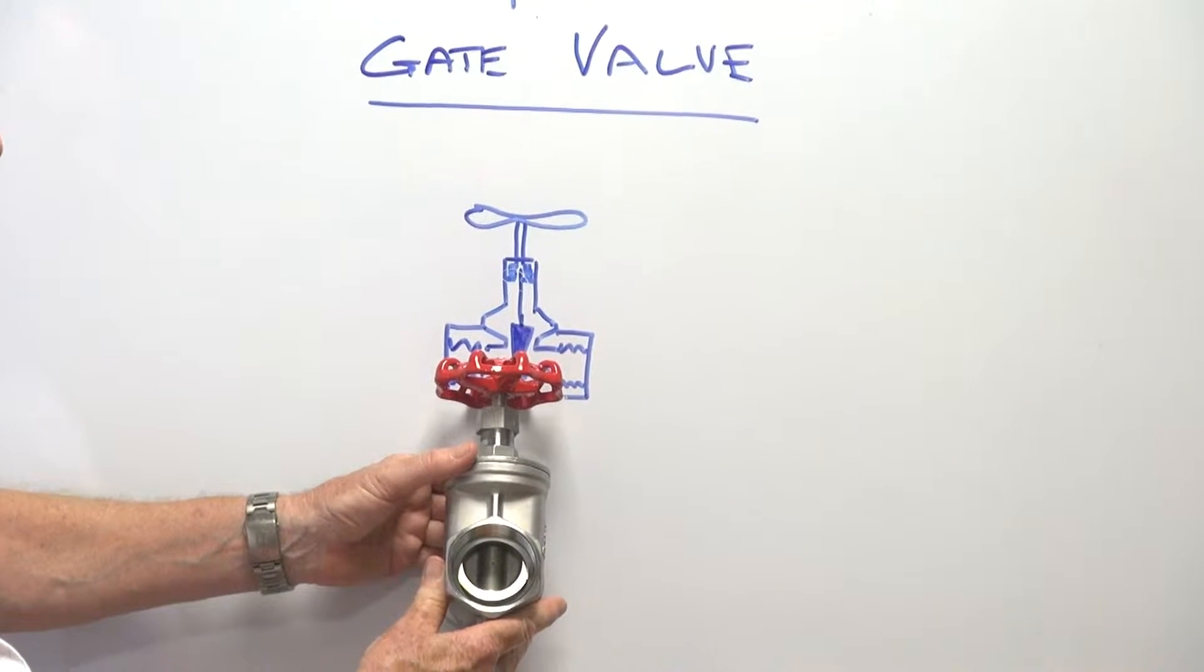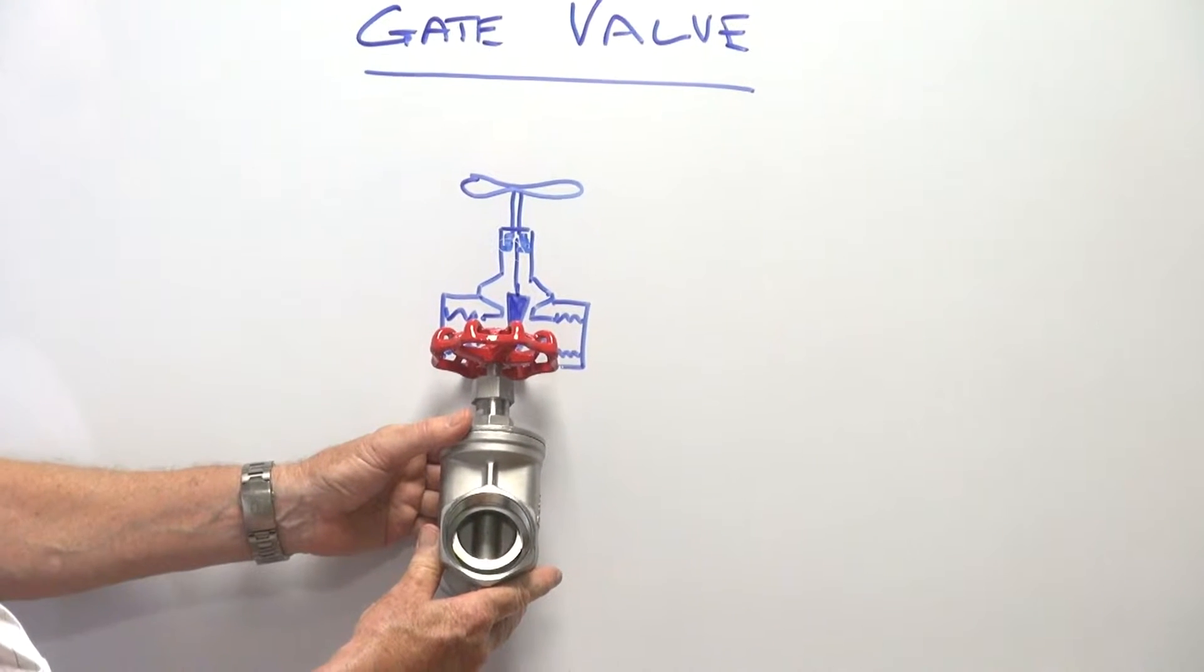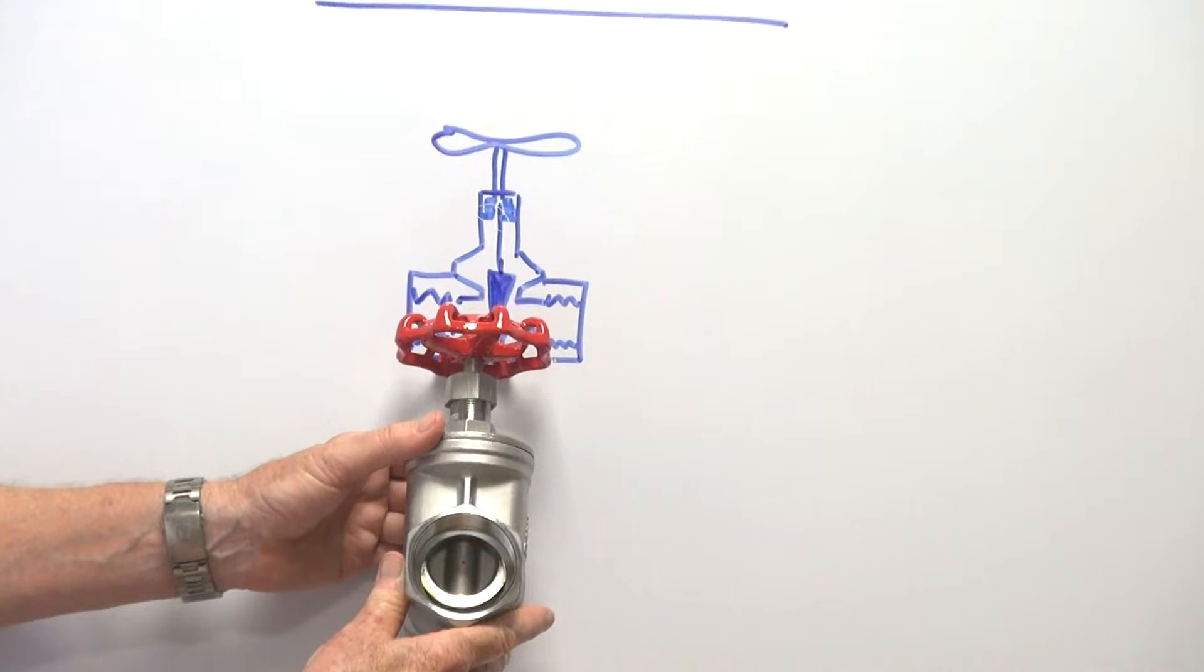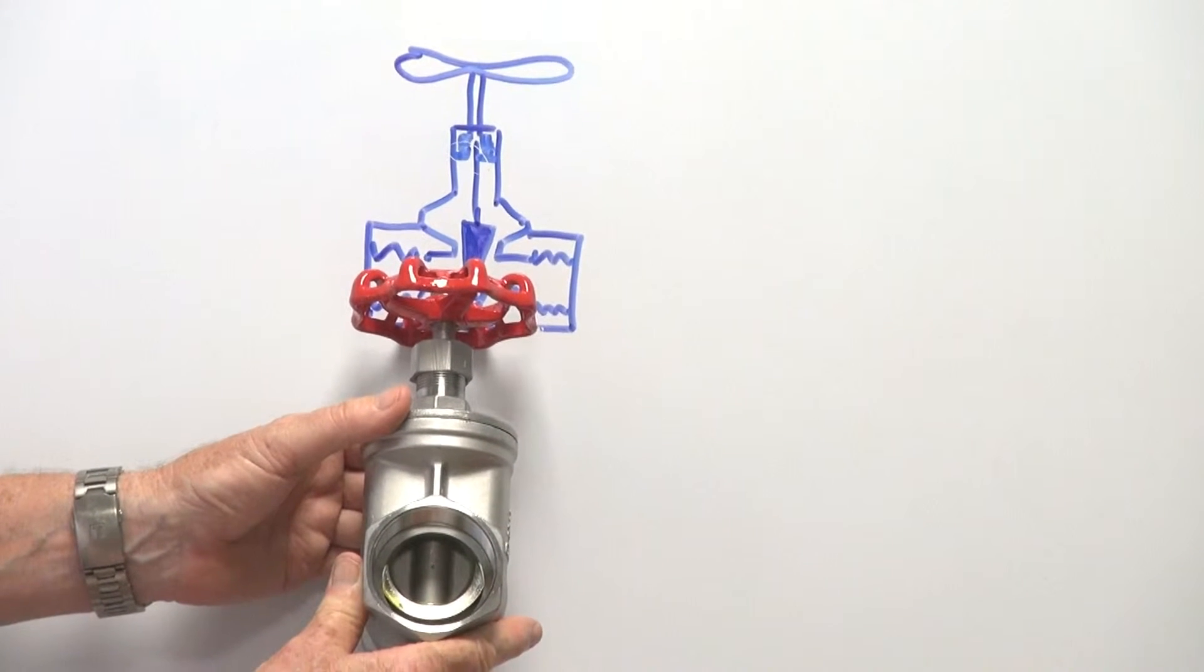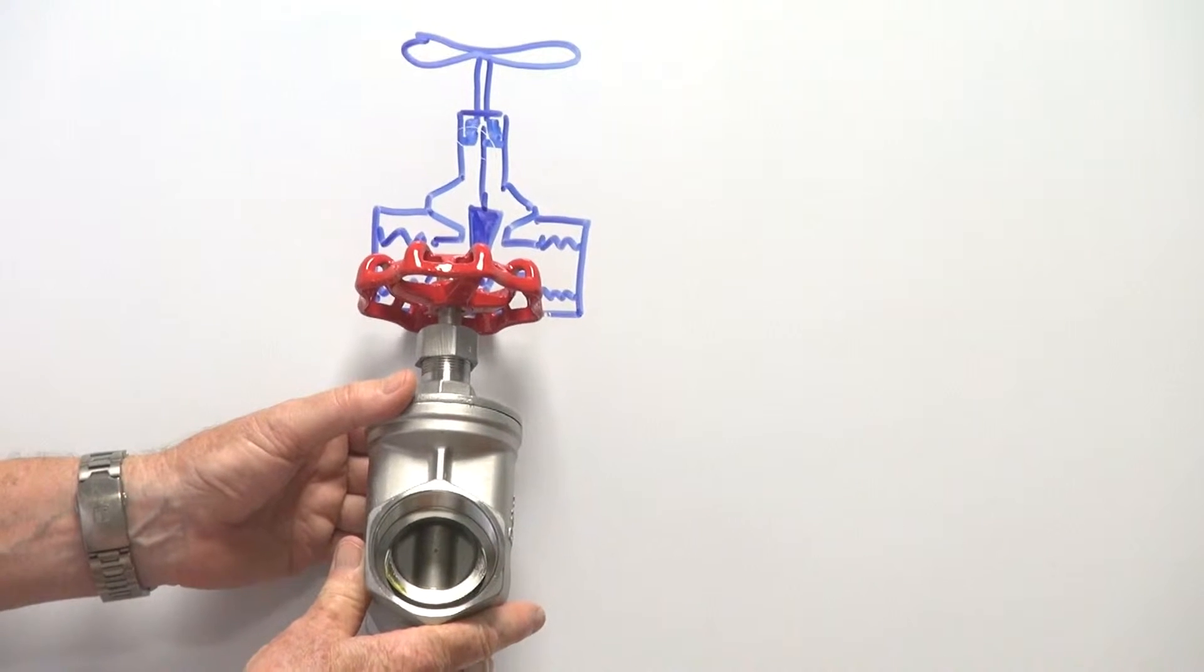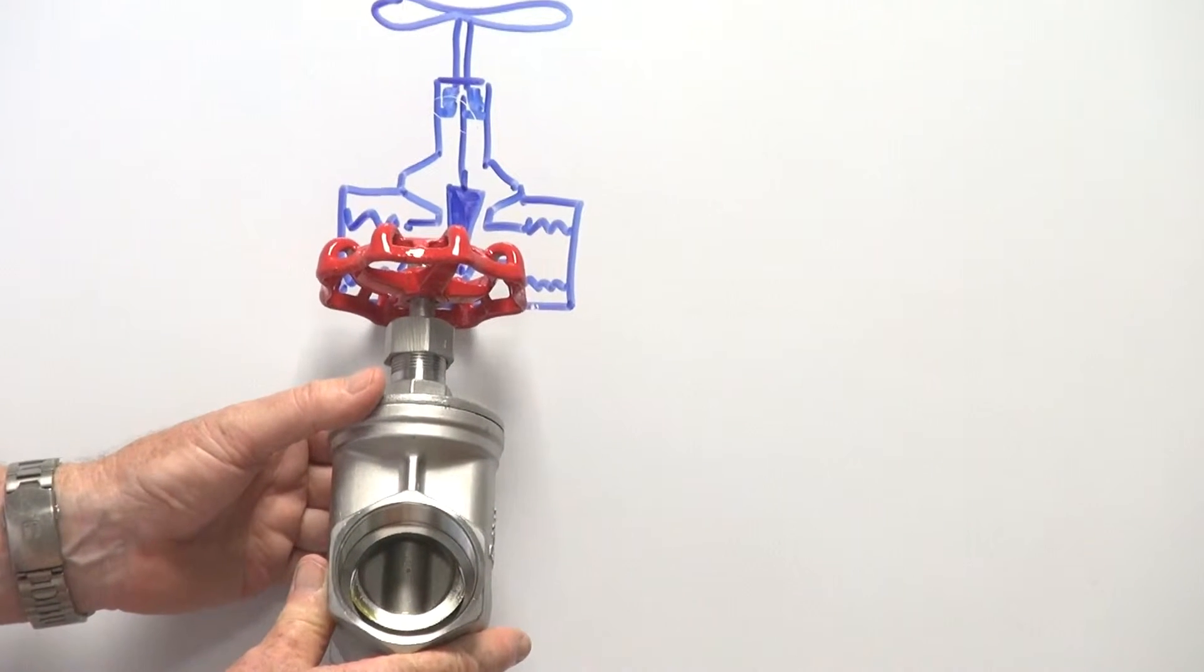When the two pieces come together, they're slightly wedge-shaped and lock into place. They're bidirectional, so you can have the flow going from either direction, and it can tolerate steam and petrochemical applications.